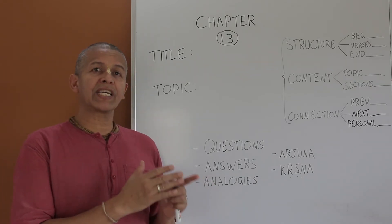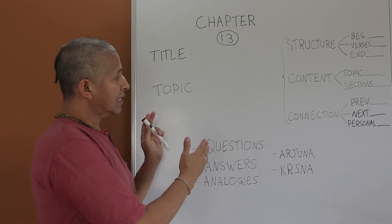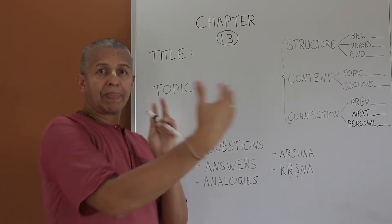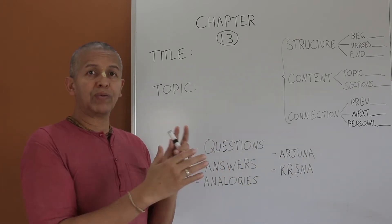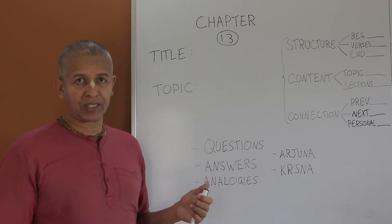This is the first chapter of the last section of the Bhagavad Gita. Chapter 13 until chapter 18 are the last part in which Krishna is consolidating what He has explained in the first and second section.